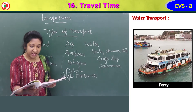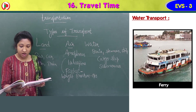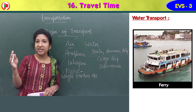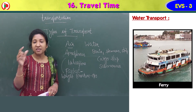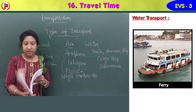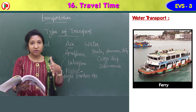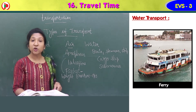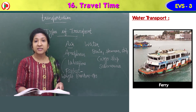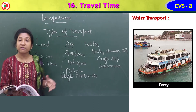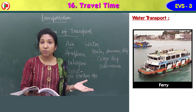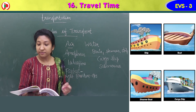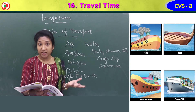A ferry carries passengers across a river or a short sea route. In villages, we can see ferry boats — small boats used for short sea route travel. You can see different types of water transport images: ship, boat, cargo ship that carries goods, and steamer boat.